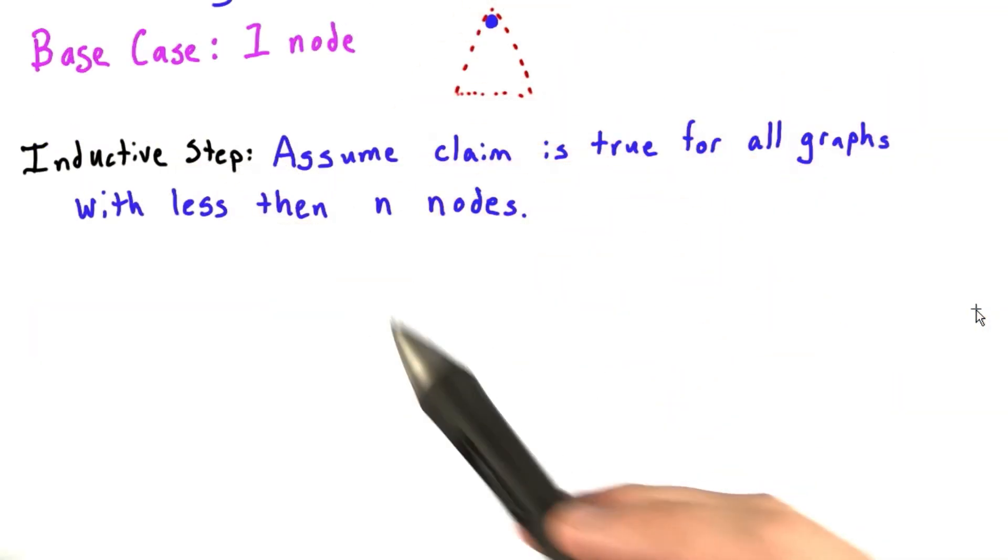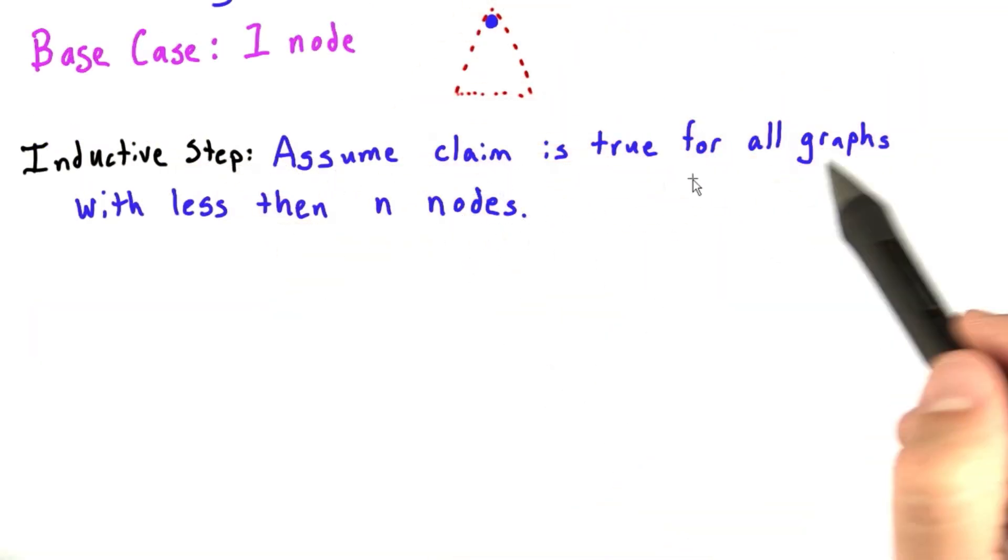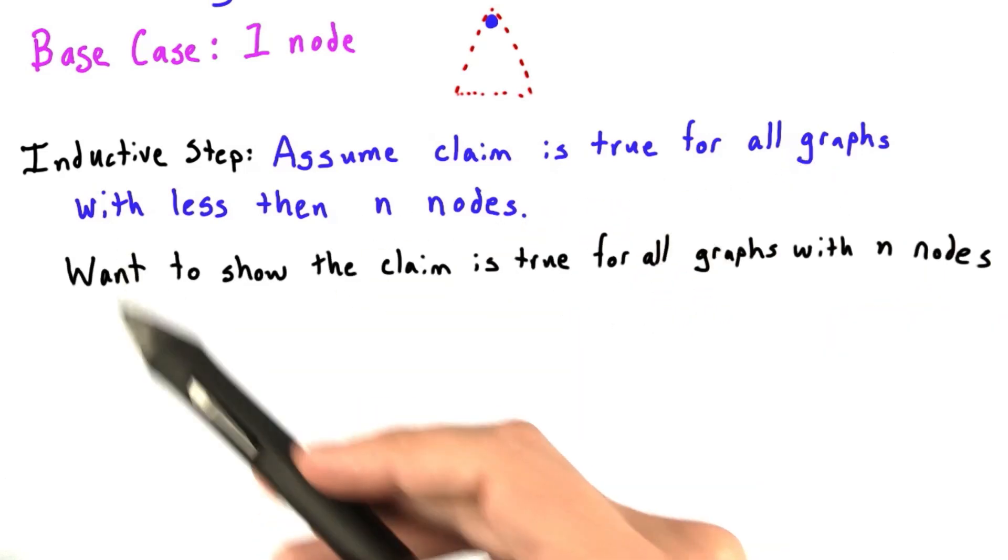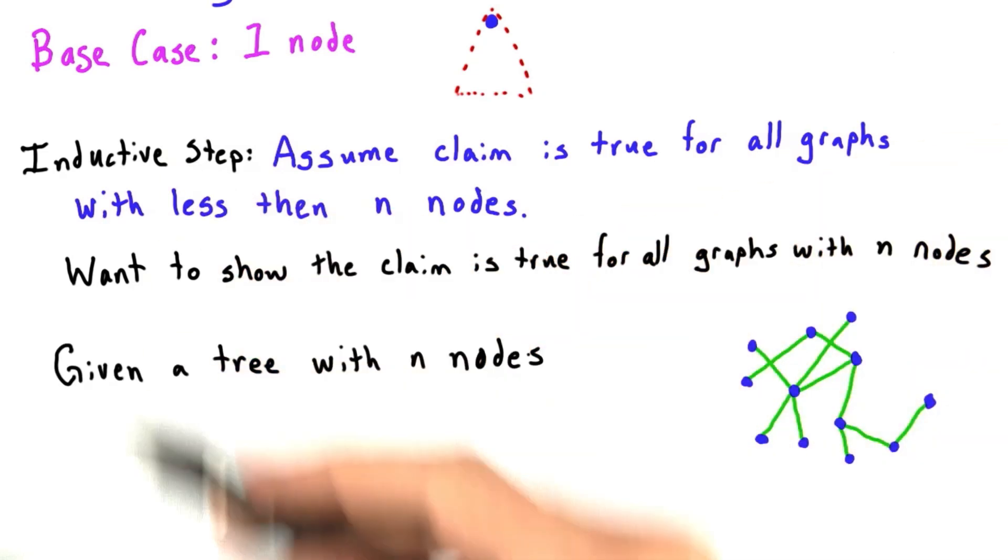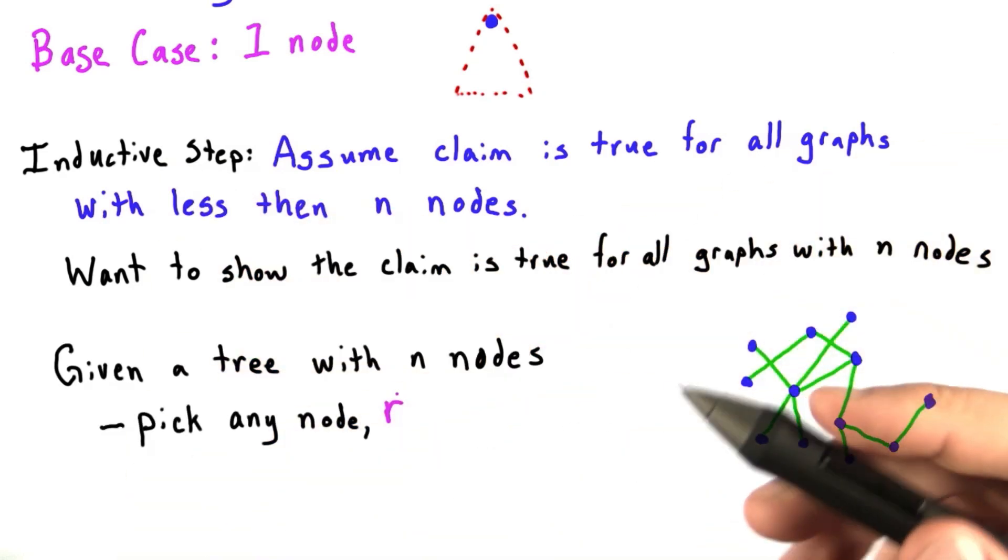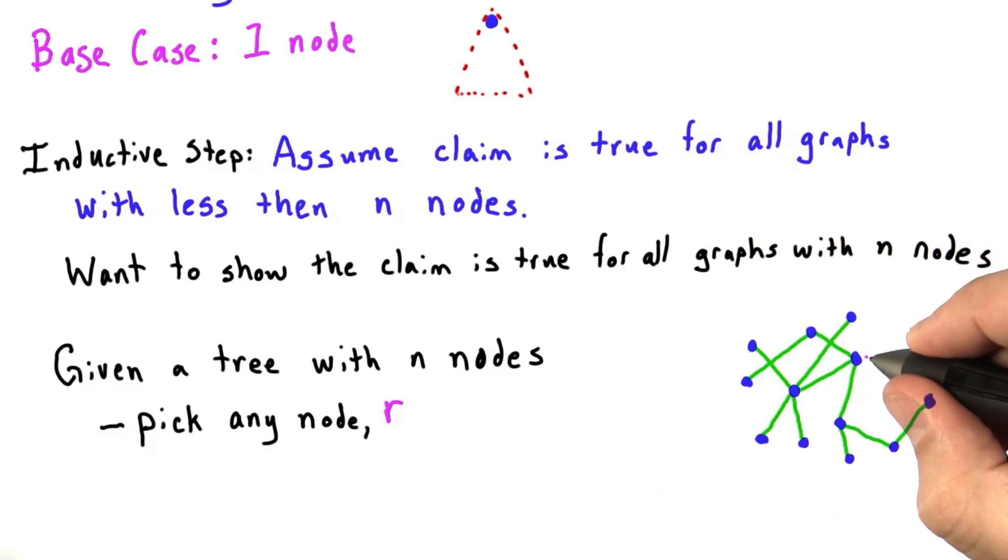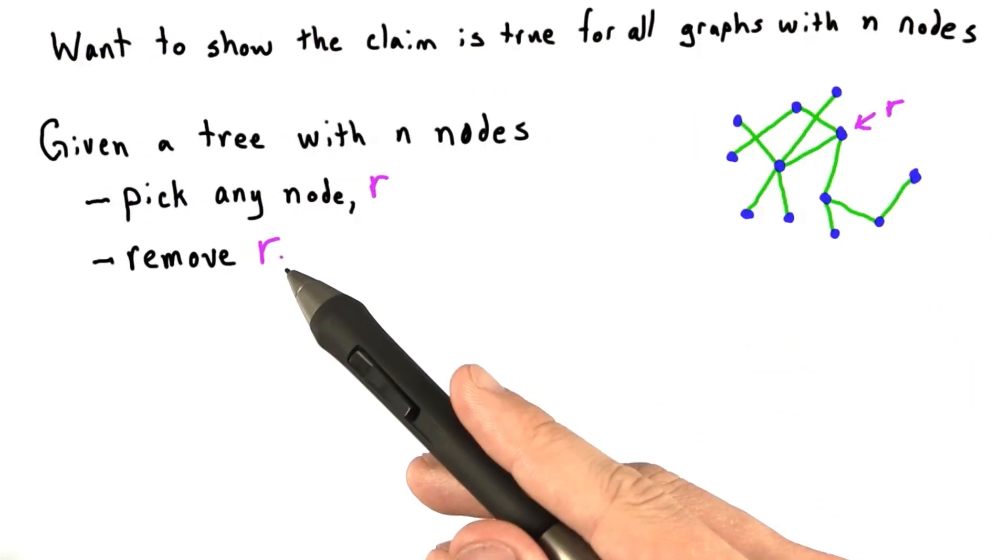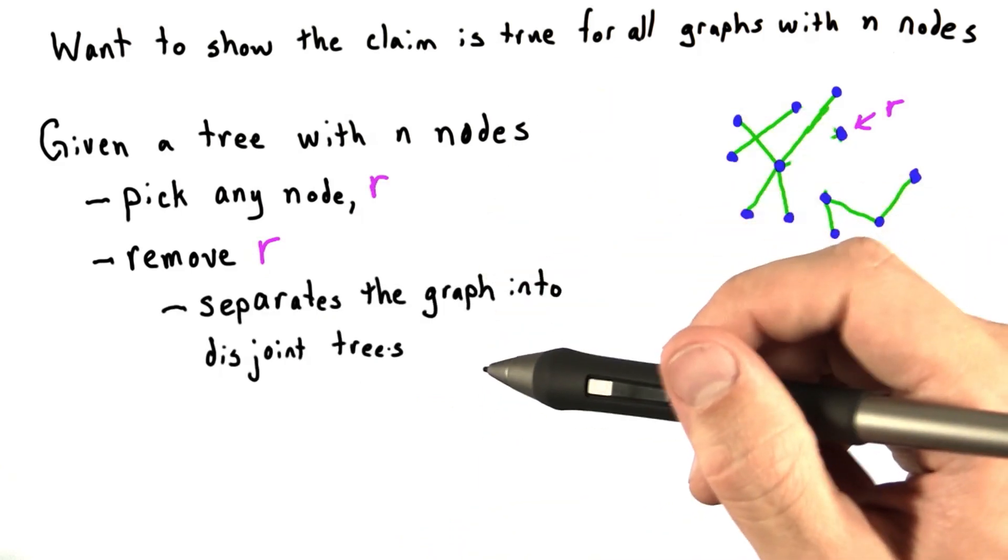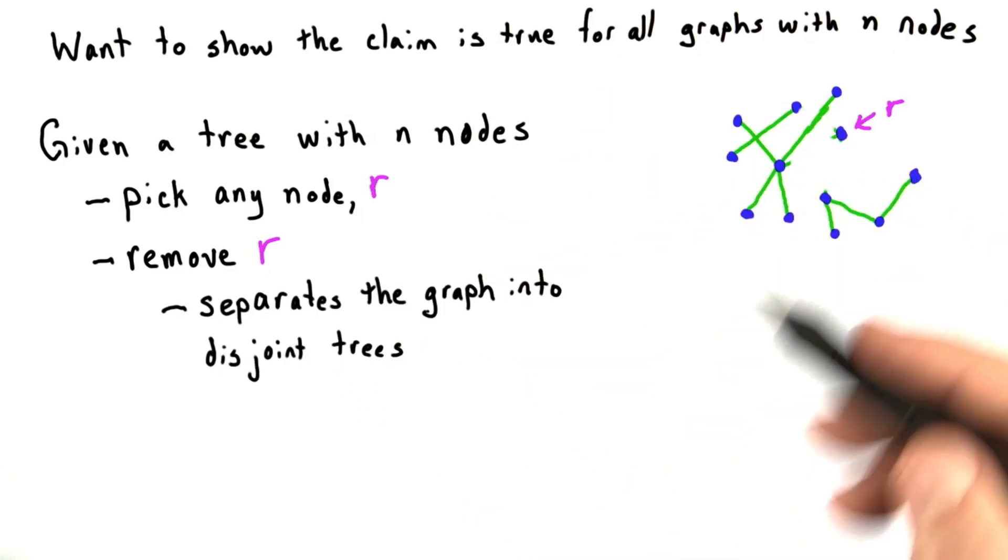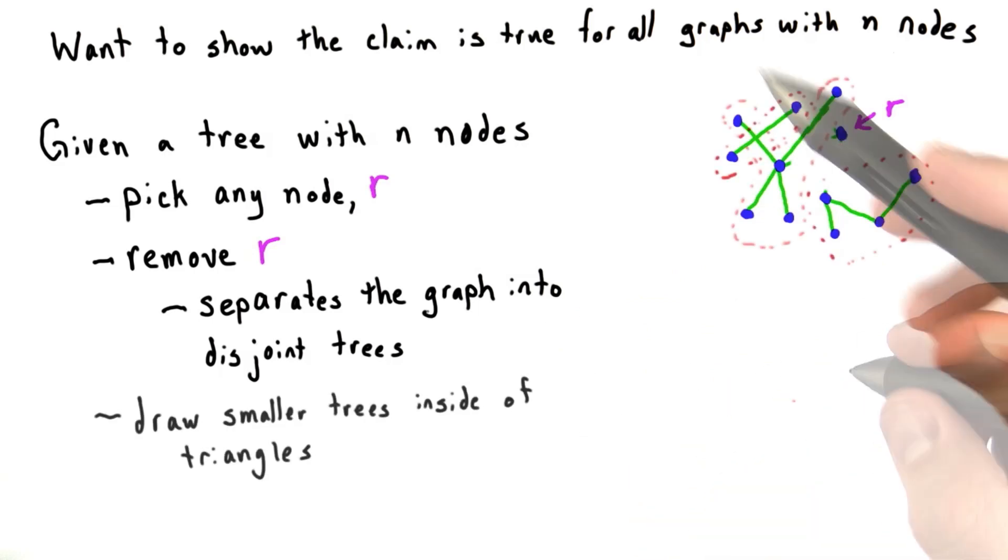And so for our inductive step, we assume that the claim is true for all graphs with less than n nodes. And we want to show that the claim is true for all graphs with n nodes. So we'll start with a tree with n nodes. We'll use this for example. We're going to pick any node kind of at random. We'll call it R. For example, we'll have this node be R. And then we remove R. Because our original graph was a tree, this separates the graph into separate disjoint trees. And now, since each of these trees have less than n nodes, we can draw each one inside of a triangle.